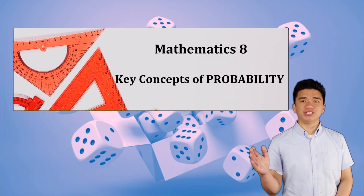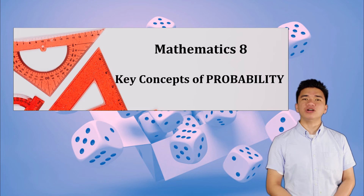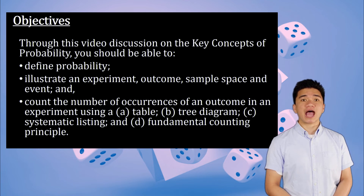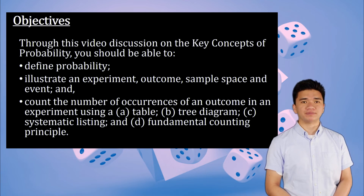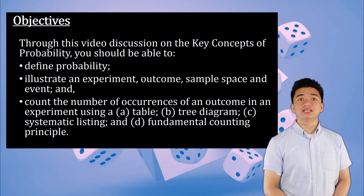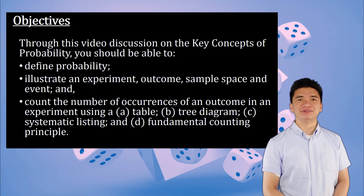This video discussion will focus on the key concepts of probability. Our objectives are to define probability, to illustrate an experiment, outcome, sample space, and event. Finally, count the number of occurrences of an outcome in an experiment using a table, tree diagram, systematic listing, and fundamental counting principle.